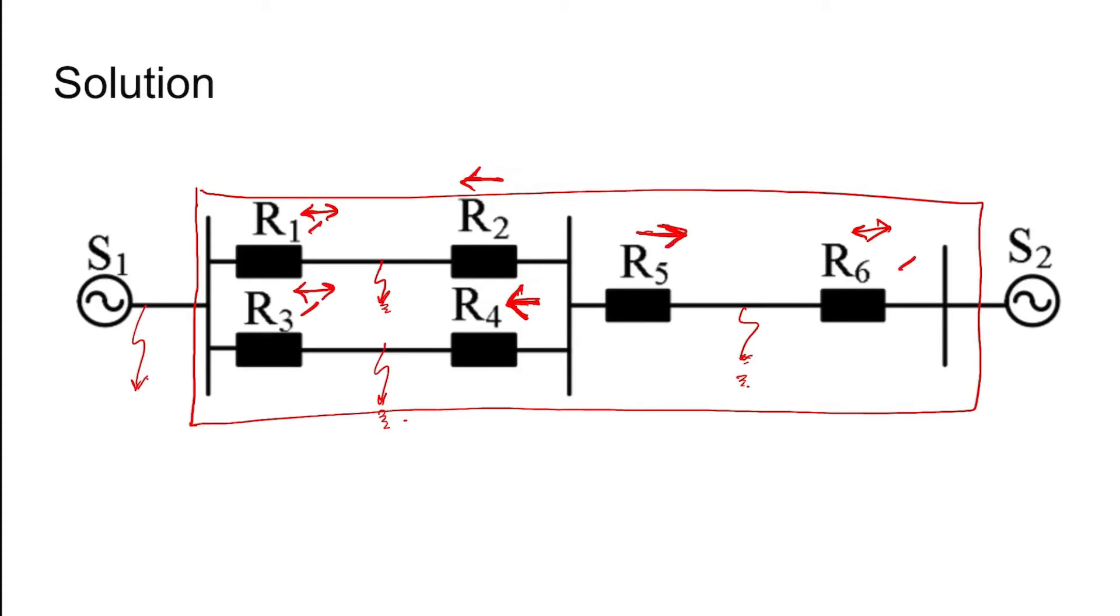So relay 5, 4, and 2 are directional relays. Relay 2, relay 4, and relay 5, and remaining are non-directional relays. Now if relay 4 fails to operate, then that is also the primary relay for this zone. Even if relay 3 operates, the fault is not isolated because the fault can persist through this way.